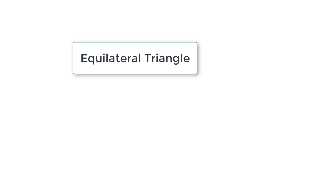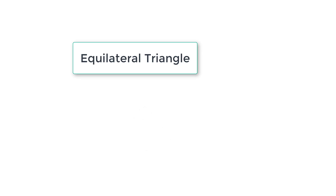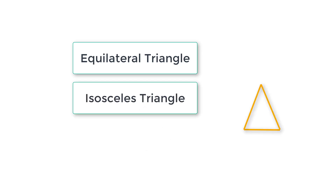A triangle is an equilateral triangle if all three sides are equal. You can see the diagram on your computer screen right now — this type of triangle is called an equilateral triangle. A triangle is called an isosceles triangle if its two sides are equal, as shown in the diagram on your computer screen.